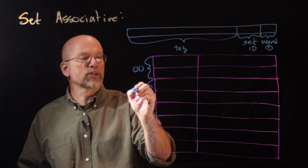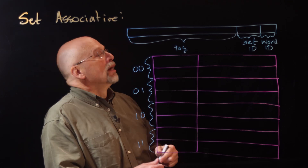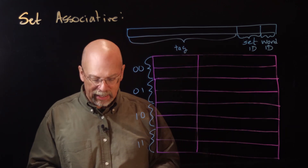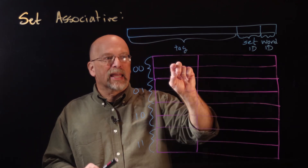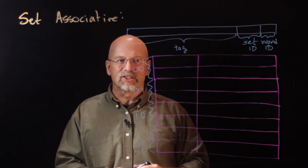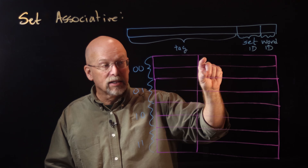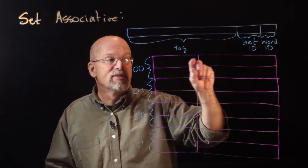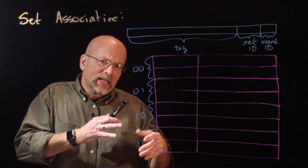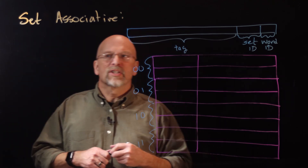The sets would be set 00, set 01, 10, and 11. What this does is create a little mini associative cache. Now I have twice as many blocks battling to be stored in a set, but since there are two lines per set, I can actually have two of those blocks sharing it at the same time. Let's do this with an example.